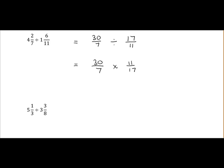Next we multiply top by top: 30 by 11 equals 330. 7 by 17 equals 119. Our final answer is 330 over 119, or as a mixed fraction, 2 and 92 over 119. The reason is 119 goes into 330 twice with remainder 92.